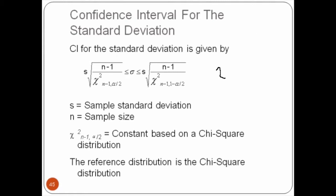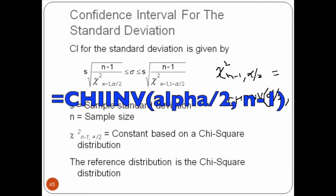For example, to calculate chi-square n minus 1 comma alpha by 2, the function we will use is CHI INV for inverse, because we are given the probability and we are finding chi-square value, so it is always inverse. Within brackets, the first number will be your alpha by 2, that probability, and the second number will be n minus 1, which is degrees of freedom. Using this function, we can easily calculate chi-square value.